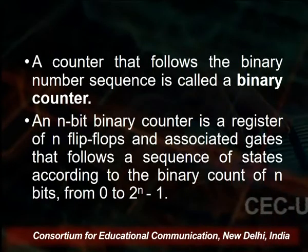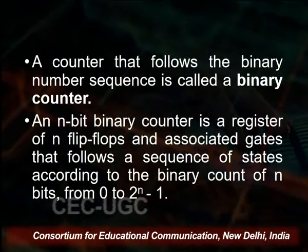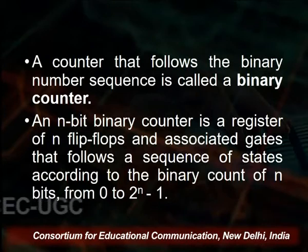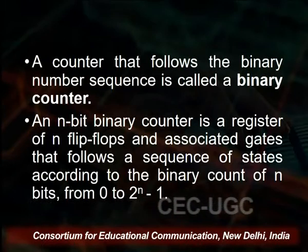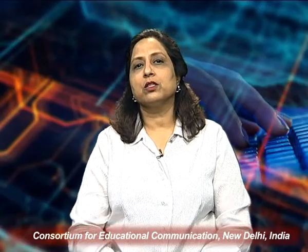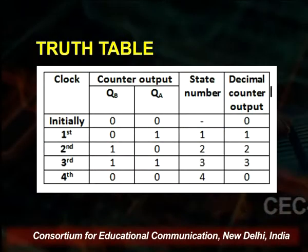A counter that follows the binary number sequence is called a binary counter. An n-bit binary counter is a register with n flip-flops and associated gates that follow a sequence of states according to the binary count of n bits — automatically from 0 to 2 to the power n minus 1. Looking at the table of counter outputs, state numbers, and decimal counter output: with a clock triggering at fixed intervals, the rightmost column shows the decimal count at each instant.